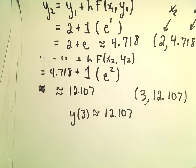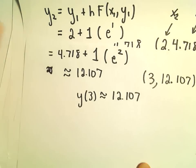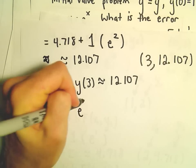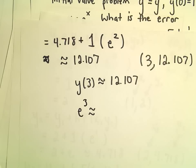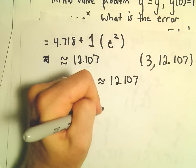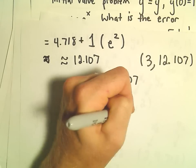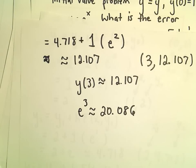Since we know the exact solution, we can always compute it. So we said the solution is just y = e^x. Well, e³—again, I'm going to round this off a little bit—e³, I'm getting 20.086 after rounding.